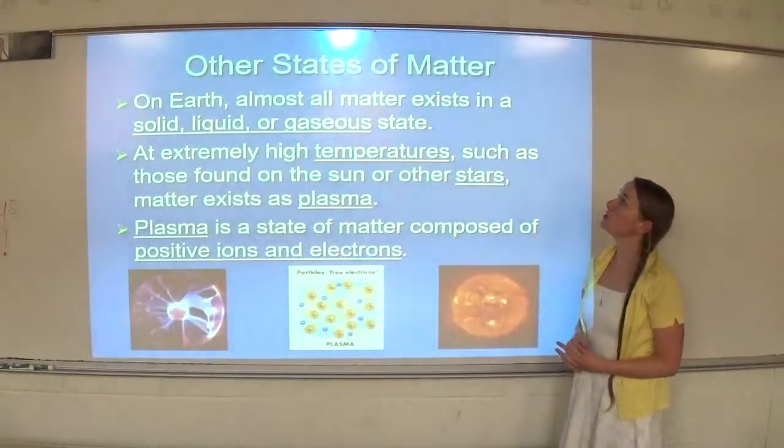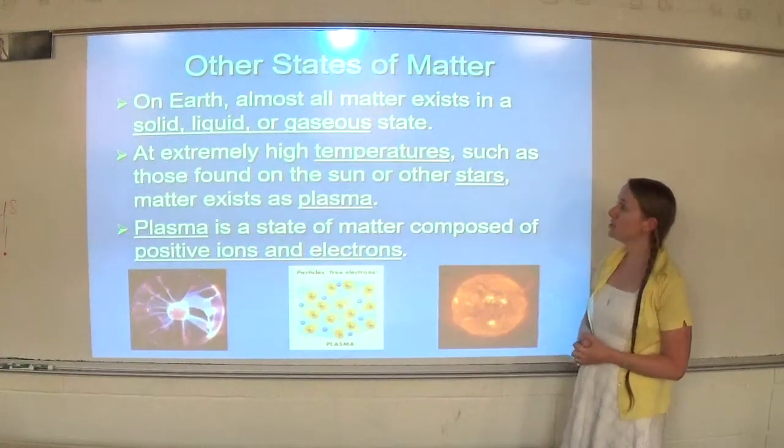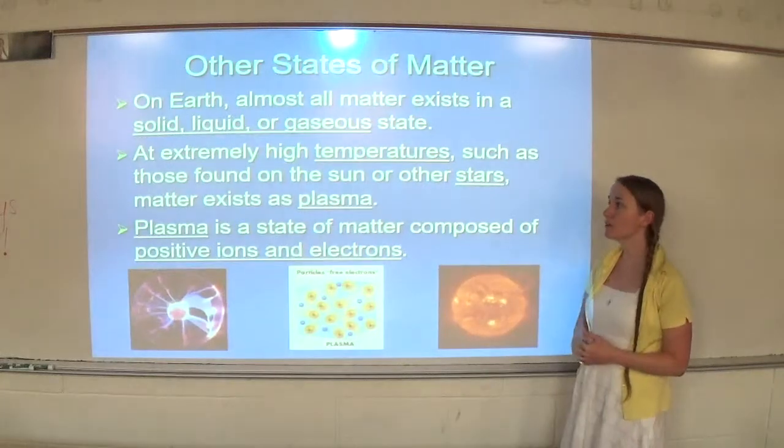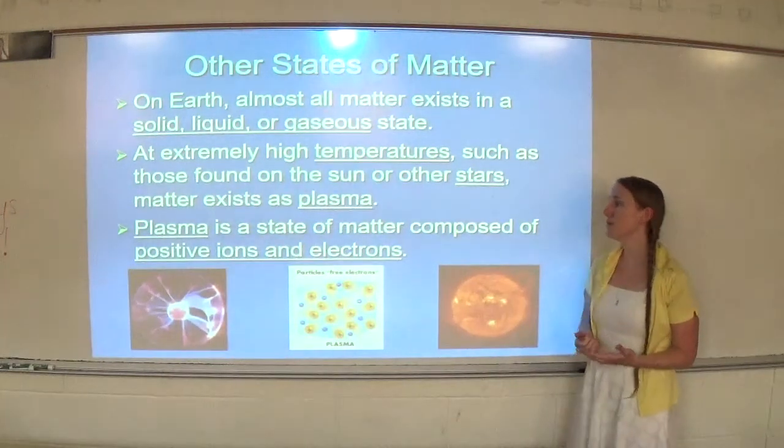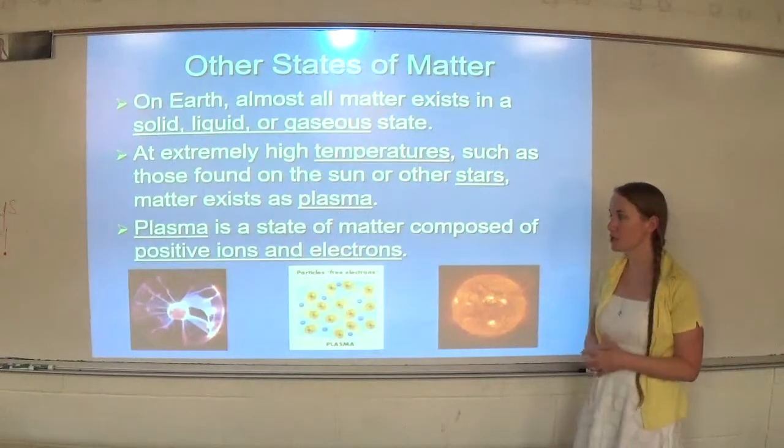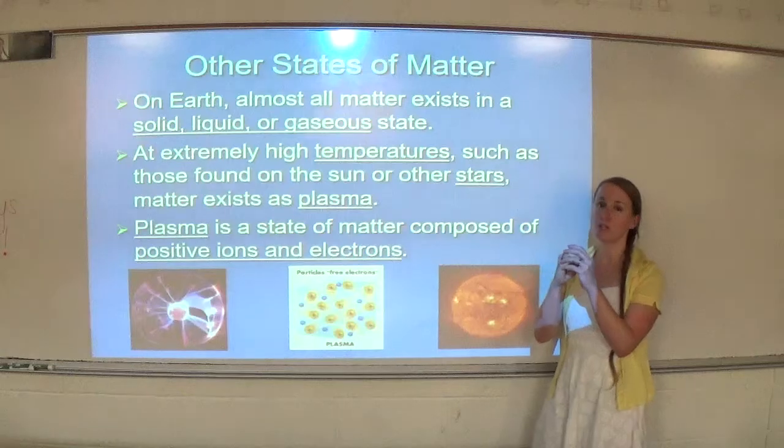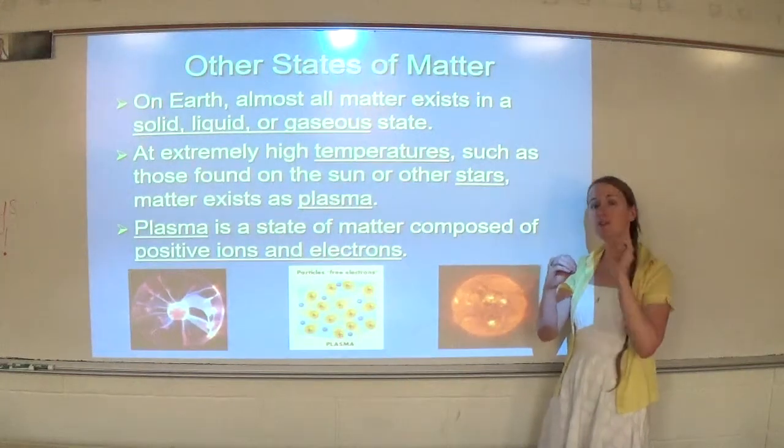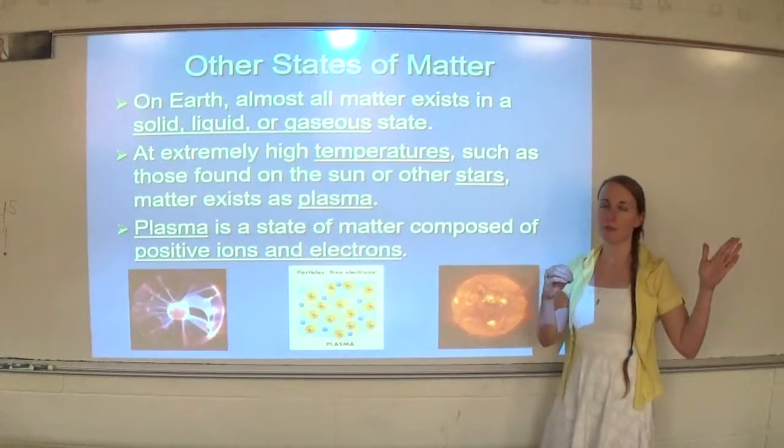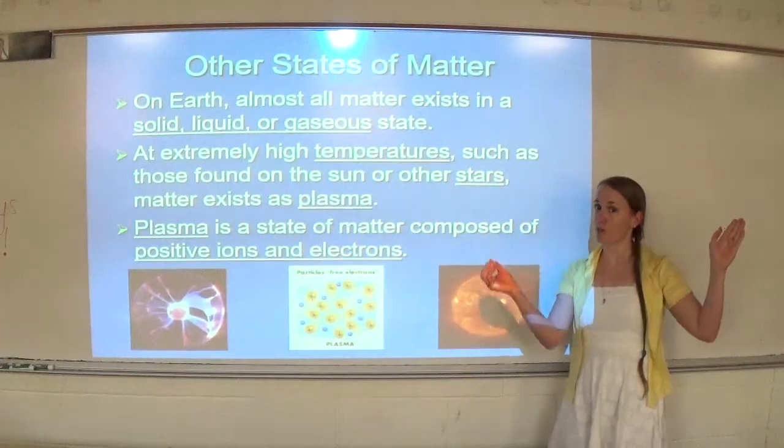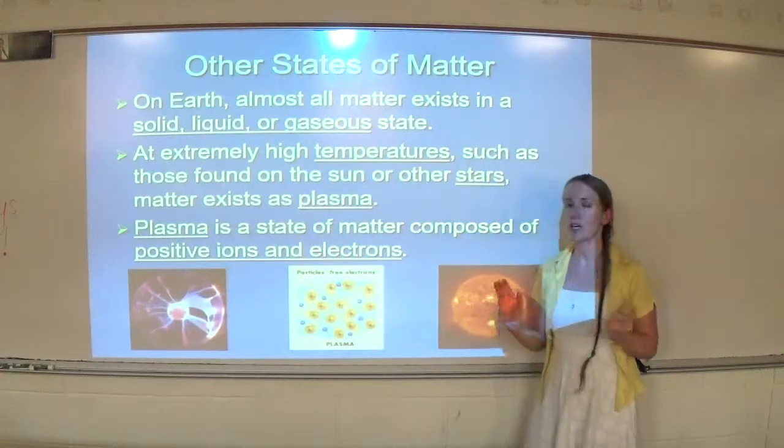On Earth, almost all matter exists in a solid, liquid, or gaseous state. However, at extremely high temperatures such as those found in the sun or other stars, matter exists as plasma. Plasma is a state of matter composed of positive ions and electrons. If you heat it up high enough, the electrons will separate from the atom. If you lose your negatives, you're left with a positive. So you have positive ions and electrons occurring in your plasma.